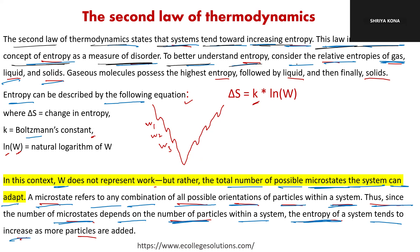To better understand entropy, consider the relative entropies of gas, liquid, and solid. In a gas, molecules are very disordered and spread far apart — highly disordered. When you control energy to a certain level, you convert gas into liquid. Controlling liquid molecule energy further solidifies it into solid. Gas molecules possess the highest entropy, followed by liquid, then solids.